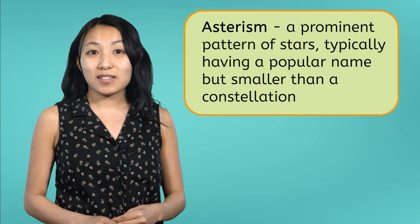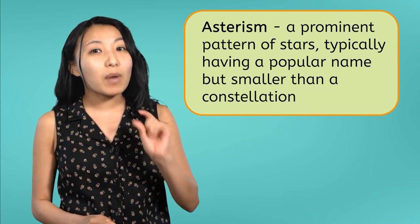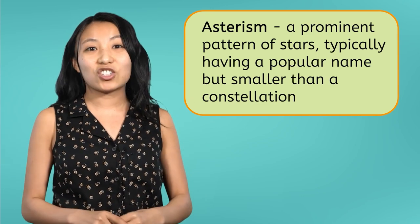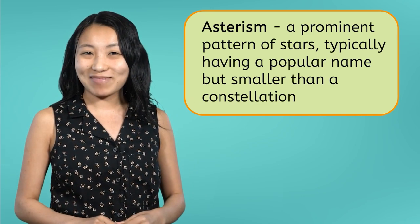The Big Dipper that you saw earlier actually isn't a constellation itself. It is a recognizable pattern with its own name, but it's smaller than a full constellation. These are called asterisms. Oftentimes, asterisms will be a smaller part of a full constellation, which is exactly what the Big Dipper is.